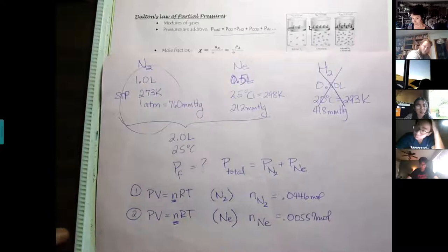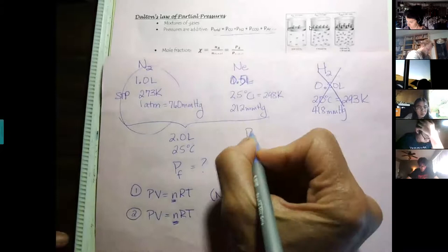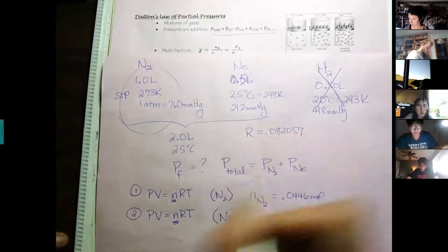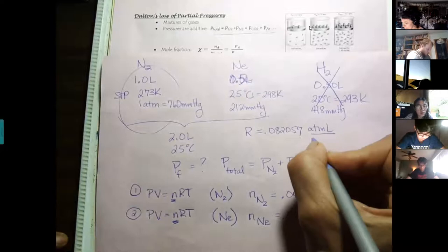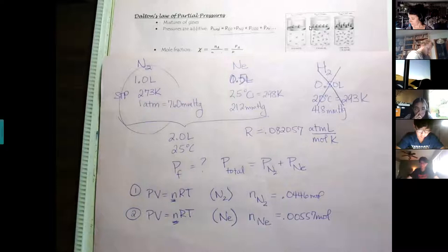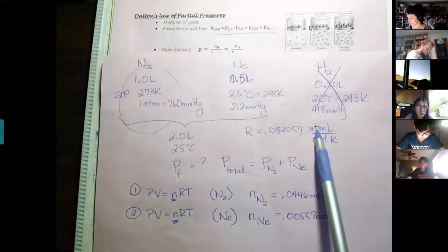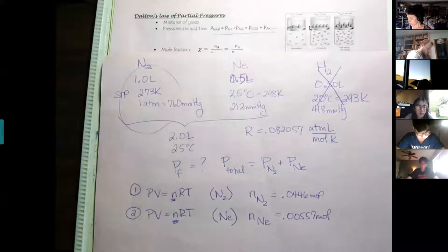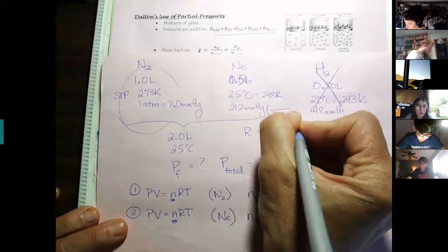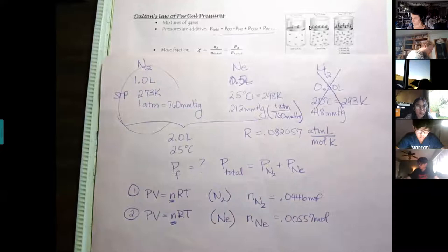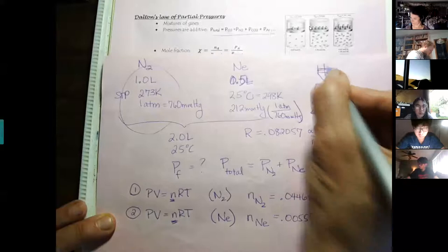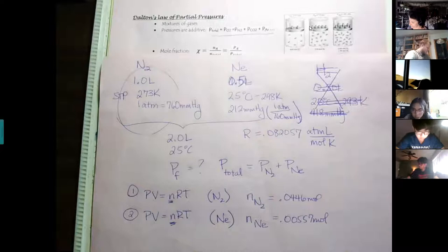Before going on, I want to mention that units are really important when you plug in. R is 0.082057, and the units when you use R are ATMs. So you have to change your millimeters of mercury to ATMs by dividing by 760. And your tests are next Thursday, so make sure your notes are really organized. Showing your work clearly is essential.